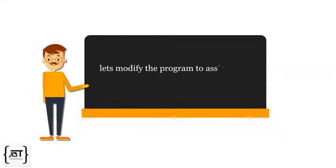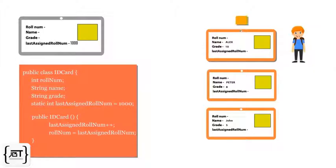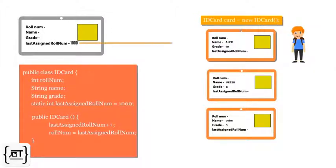Now let's modify the program to assign role numbers sequentially. Let's define a constructor for the ID card class. It increments the last assigned role number and assigns it to the role number. When the first student joins, an ID card object is created. The last assigned role number value is picked from the class, incremented, and assigned to the student.